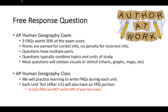The FRQs typically have some kind of visual or stimuli. With the three FRQs on the AP Human Geography exam, you would usually have one with just questions, a second with charts and graphs, and a third with some kind of picture or map — some kind of stimuli.